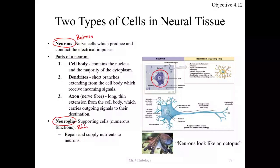Neurons kind of look like an octopus in tissue. There is a large cell body with a long axon and multiple dendrites. The cell body holds the nucleus. The dendrites are the receiving ends — branches that receive incoming signals. The axon, or nerve fiber, is where the outgoing signal travels — like a wire the signal travels down.